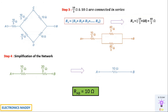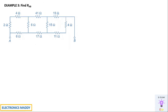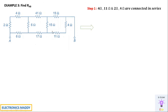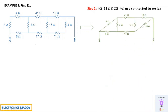The third problem looks complicated but is straightforward. We need to find the effective resistance between terminals A and B. The first step is to look for resistors in series or parallel that can be simplified — but don't touch the terminals A and B themselves. Here, 2 ohm and 4 ohm are in series giving 6 ohms, and 11 ohm and 4 ohm are in series giving 15 ohms.